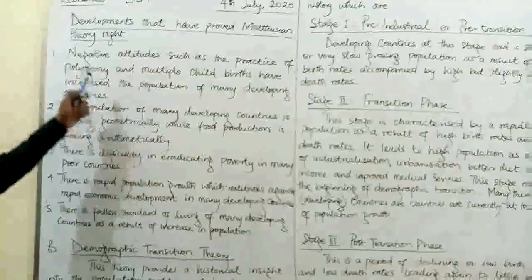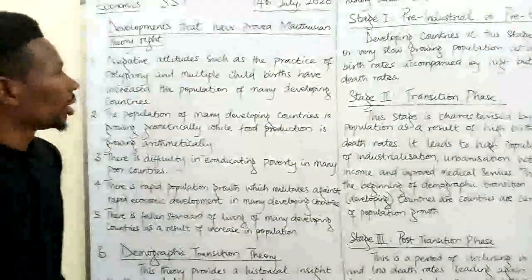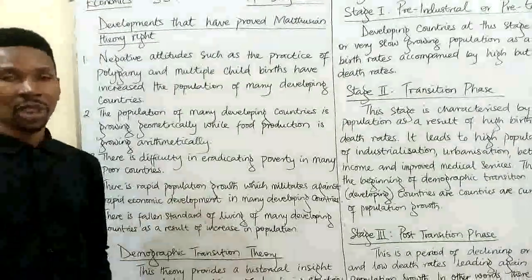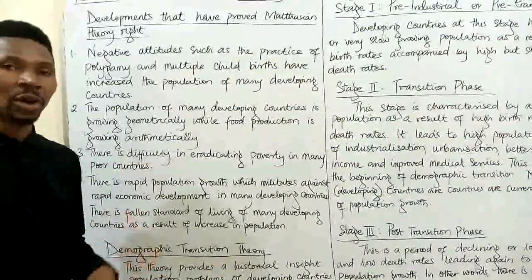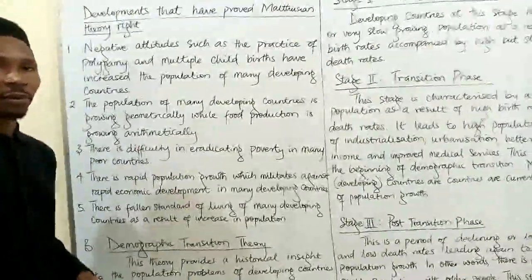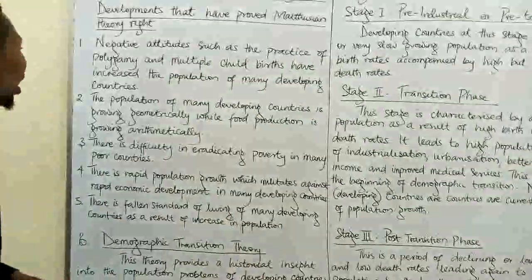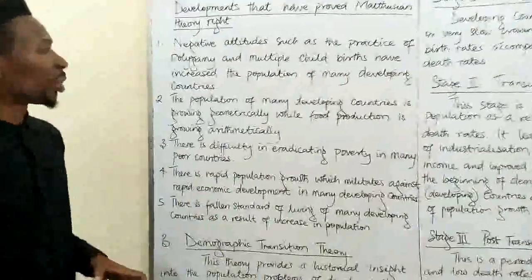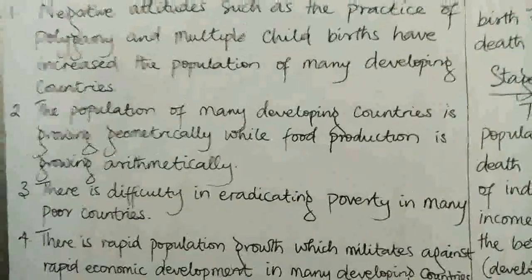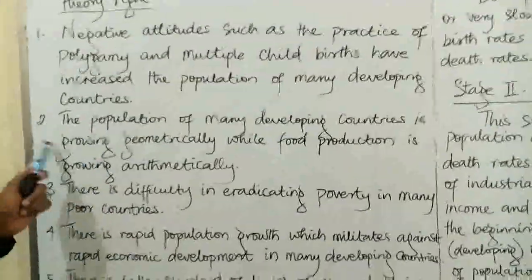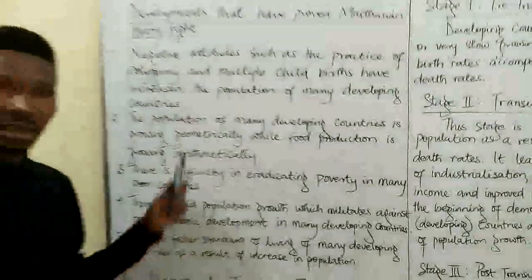These things like polygamy and multiple child births, predominantly practiced in Africa or in developing countries, make one believe that the population growth has outnumbered or outweighed the food supplies. Number two, the population of many developing countries is growing geometrically while food production is growing arithmetically — this supports the first point stated earlier.